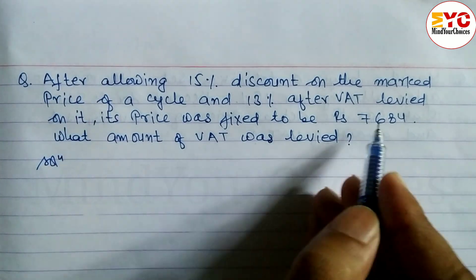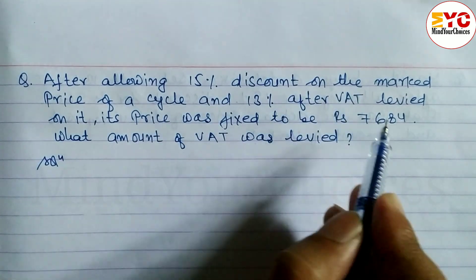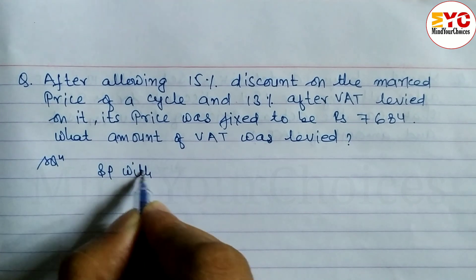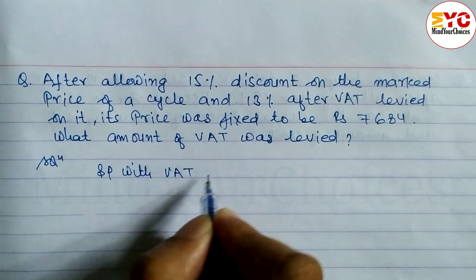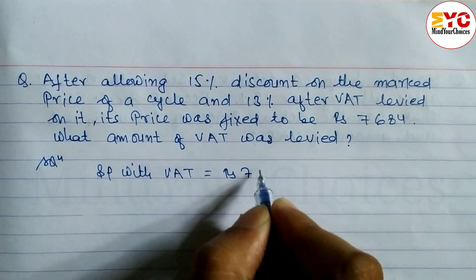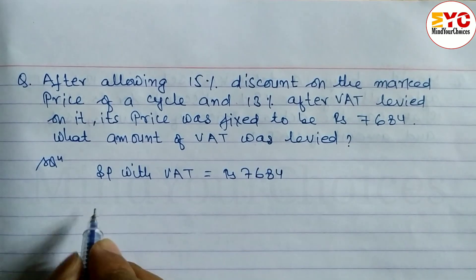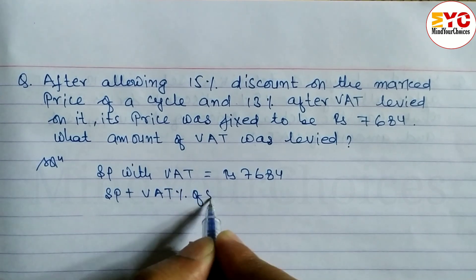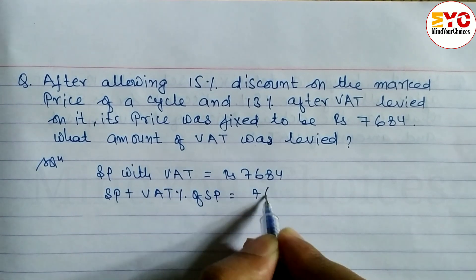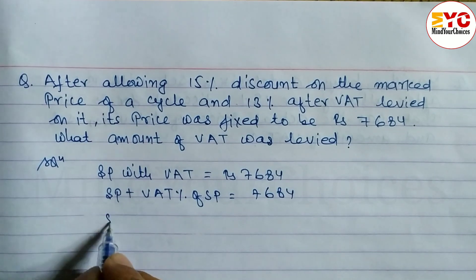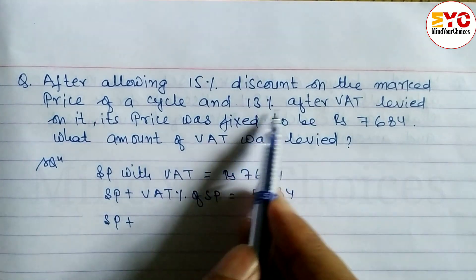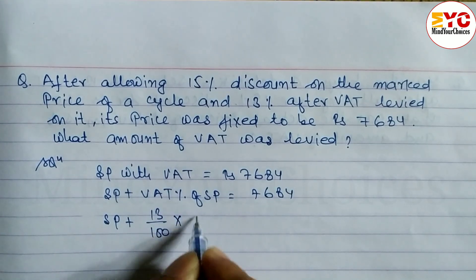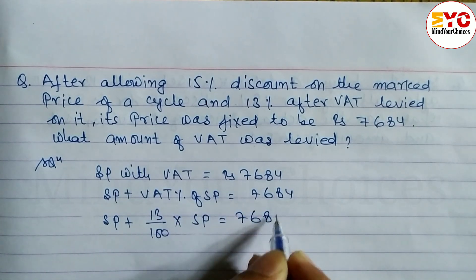So let's take a start. SP with VAT, after 15% discount, is equal to rupees 7684. The formula: SP plus VAT percent of SP equals 7684. VAT percent is 13%, so we write SP plus 13 divided by 100 into SP equals 7684.